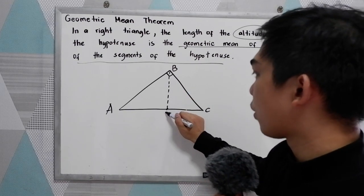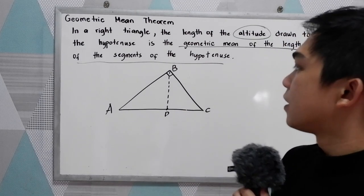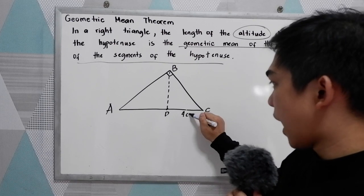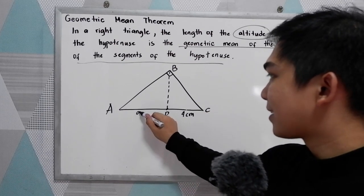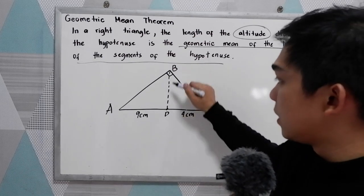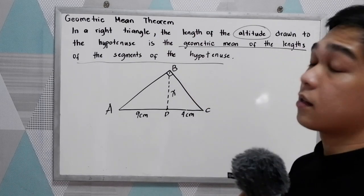Let's name it point D. Now, given DC, that is 4 cm, and AD, that is 9 cm, how are we going to find BD? Let's say that is X.